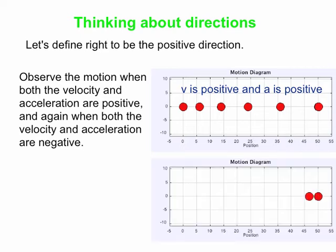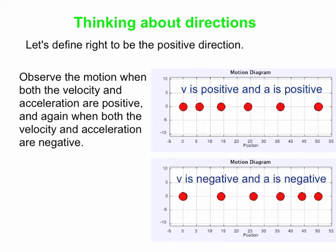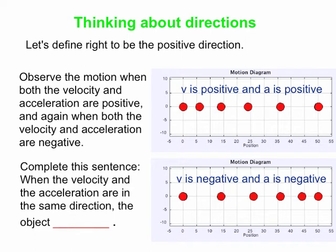Now we'll do the mirror image of that. The velocity is initially directed to the left, and the acceleration is also to the left, so both the velocity and the acceleration are negative. The object is now going right to left. The dots in the motion diagram are closely spaced at the beginning, and as time goes by they get further and further apart, consistent with the object speeding up. So when the velocity and acceleration are in the same direction, the object speeds up.